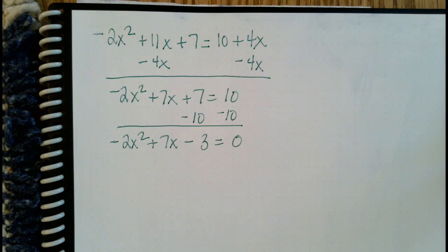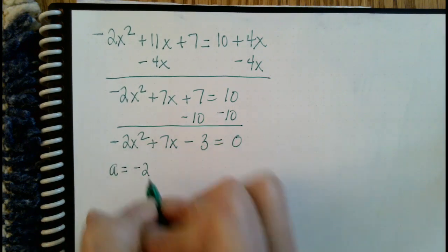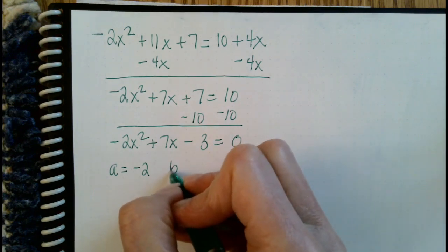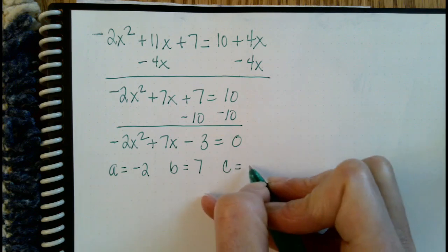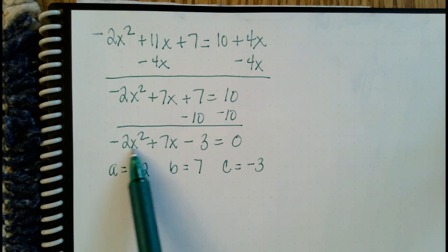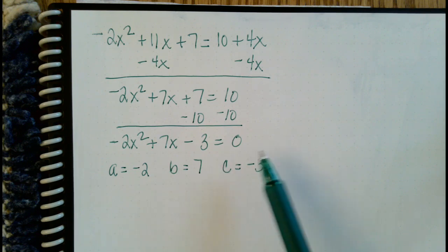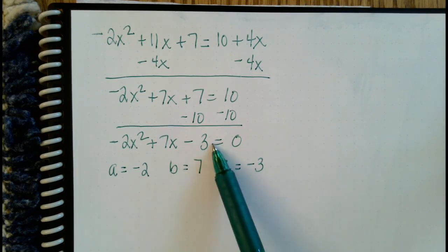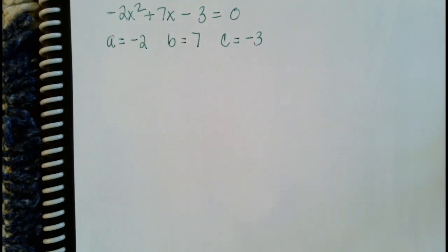This is standard form. What we can identify from here is that a is the number in front of the x squared term, b is the number in front of the x term, and c is the constant — the number without a variable. Notice that the number in front of the x squared term was negative 2. The number in front of x was positive 7, and the constant was negative 3. Once we know those three pieces, we use those values in the quadratic formula.